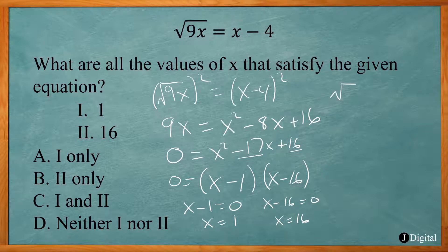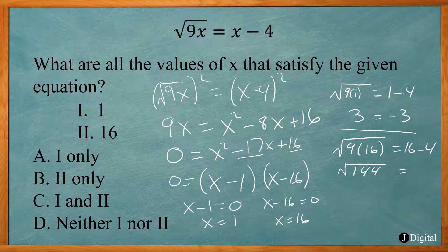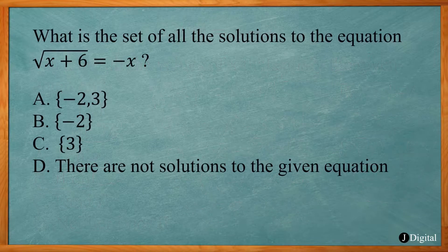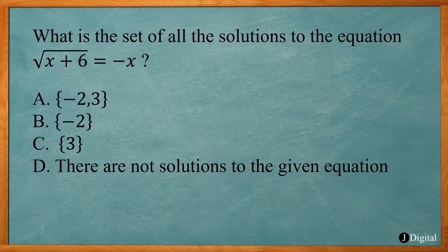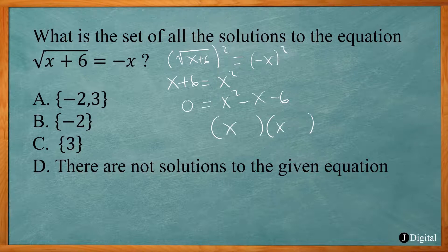In this SAT problem, it says if the square root of x plus the square root of 16 equals the square root of 81, what is the value of x? When we have a square root of a number, we can just evaluate it. Square root of 16 is 4, and square root of 81 is 9. Subtracting 4 from both sides gives us square root of x equals 5.